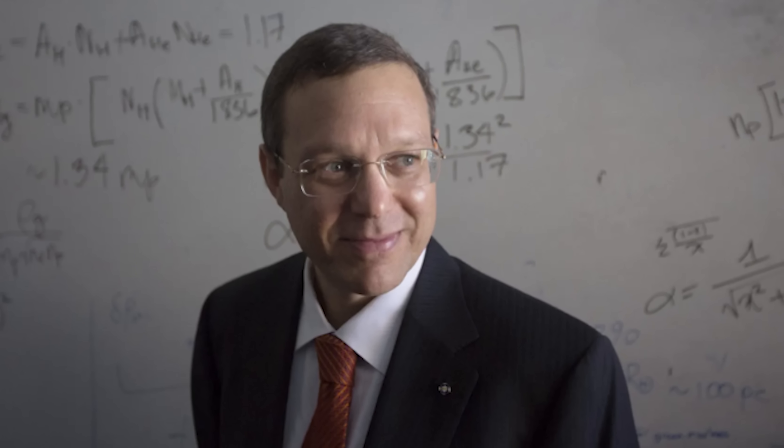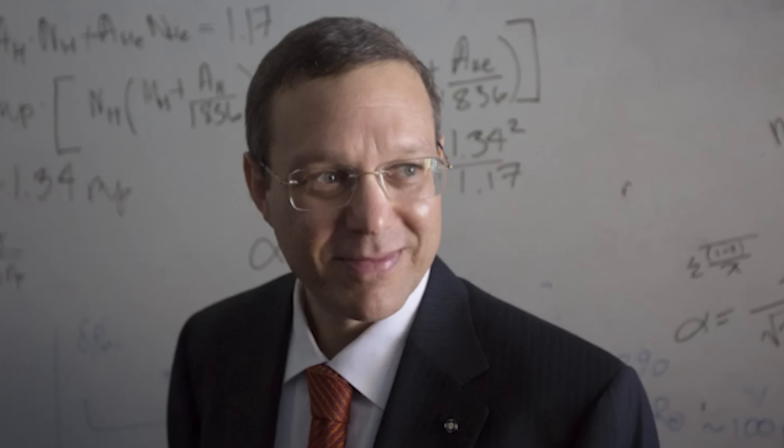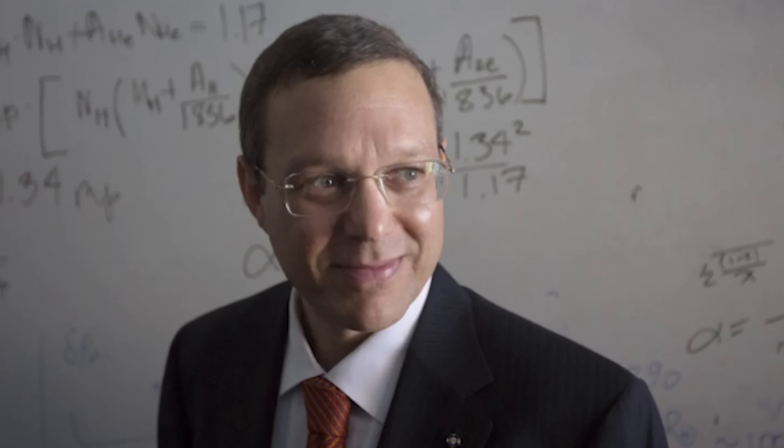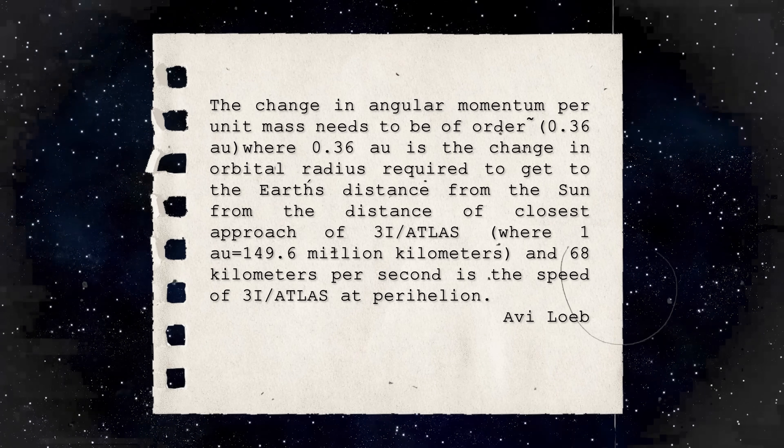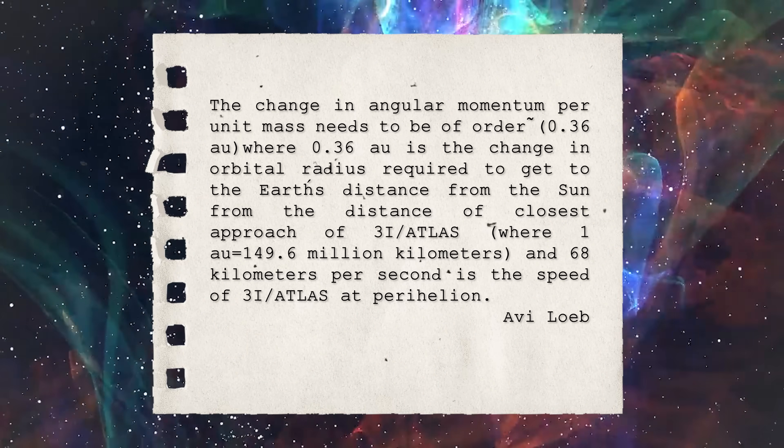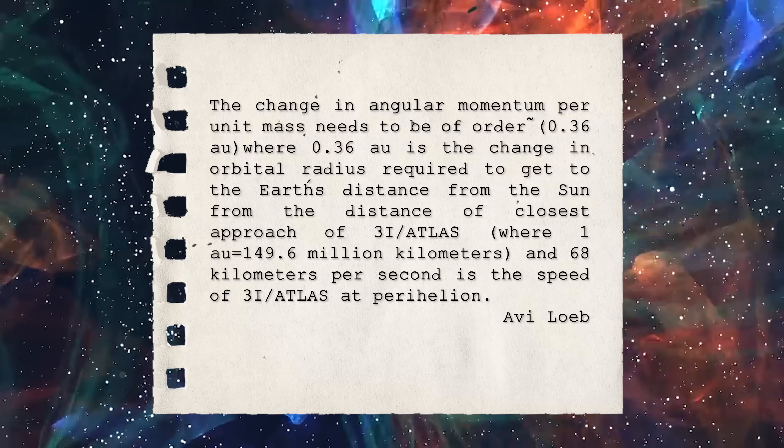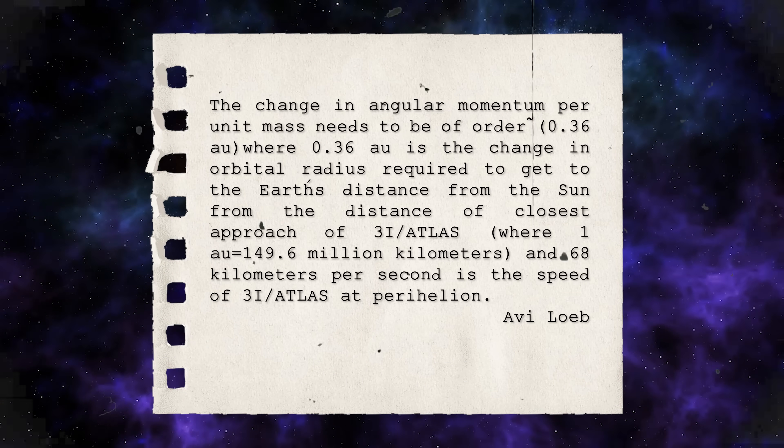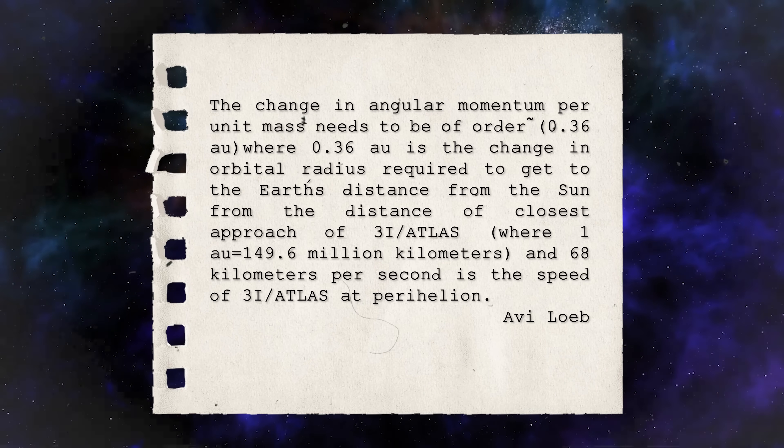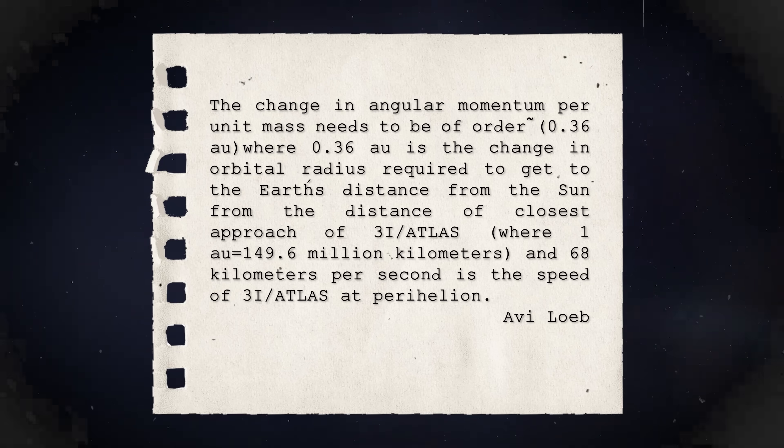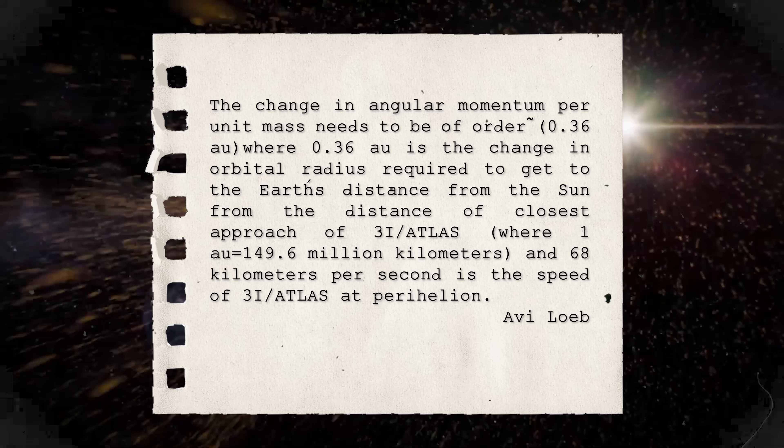In line with this idea, Avi Loeb has offered some intriguing explanations. According to him, the change in angular momentum per unit mass needs to be of order 0.36 astronomical units, where 0.36 AU is the change in orbital radius required to reach Earth's distance from the Sun, and 68 kilometers per second is the speed of 3I Atlas at perihelion.